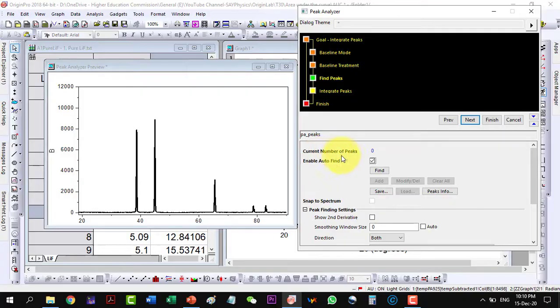It is saying that currently the number of peaks are zero. So I will have to find the peaks with the auto-find, and here they are. So it has found three peaks, as they are having the most of the contribution from these three peaks, while these two peaks are not auto-found. So I can find them manually, but let's go on with these three peaks, and I go Next.